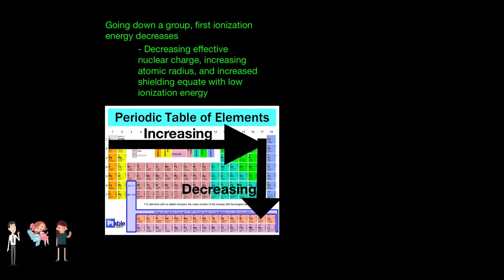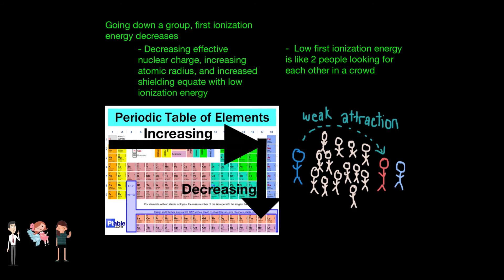This means that less energy is required to remove an electron. Following the analogy of hugging, low ionization energy is like two people looking for each other in a crowd. The two people look for each other because they have some attraction, but there's a lot of distance between them and there are many people between them causing shielding. Because their attraction is low, they are far apart and there are many people in the way, so it is very easy for one of the people to be taken away by a friend.